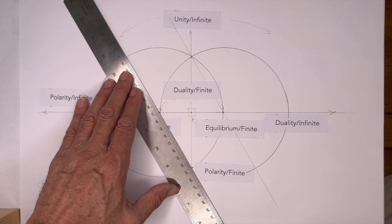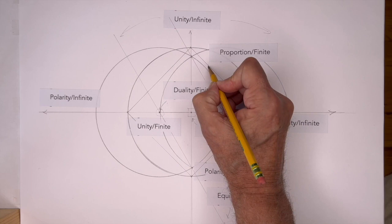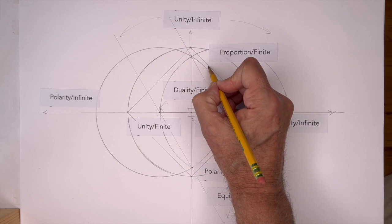The relationships between the sides of a rectangle or right triangle are the finite aspect of proportion. The relationship between the acute angles of a right triangle or a rectangle represents proportion in its infinite aspect.